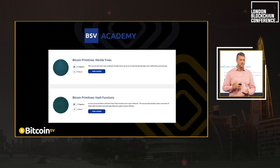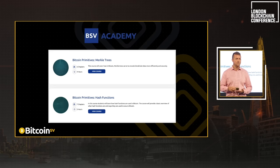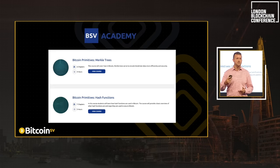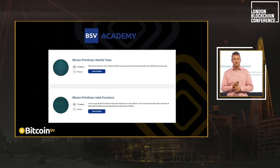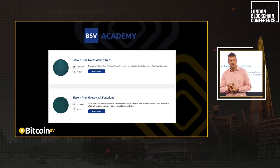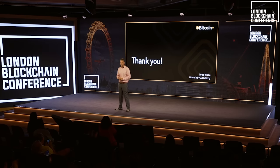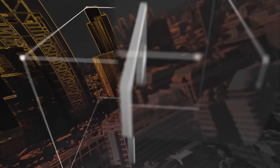These topics are covered in our primitives courses at the Bitcoin SV Academy — Merkle trees, hash functions, and digital signatures. The courses are free, include rigorous assessments, and provide a certification demonstrating competency in these topics. I hope to see you going through them, advancing your knowledge, and having more meaningful discussions around Bitcoin. Thanks very much for listening — see you tomorrow.